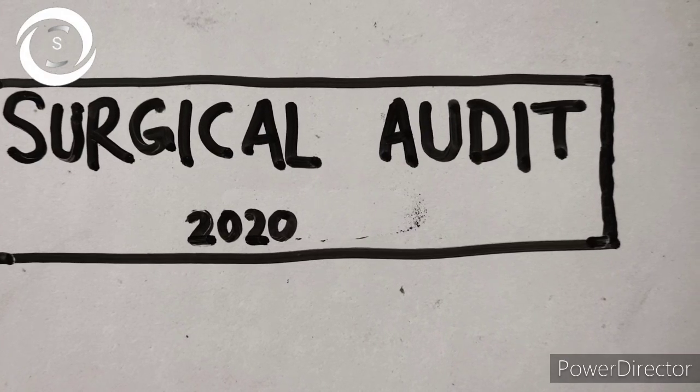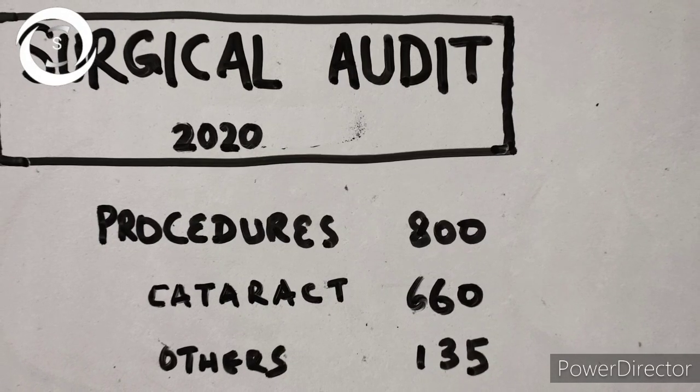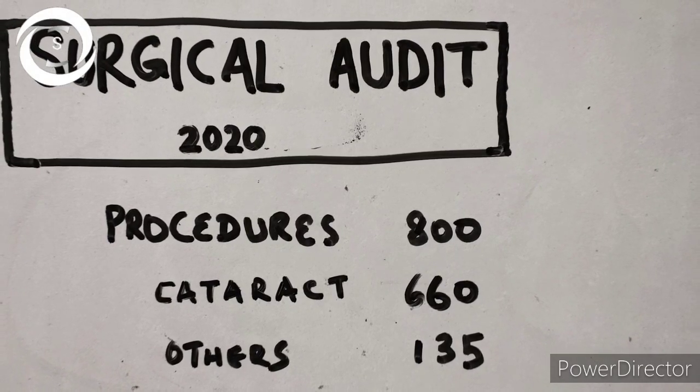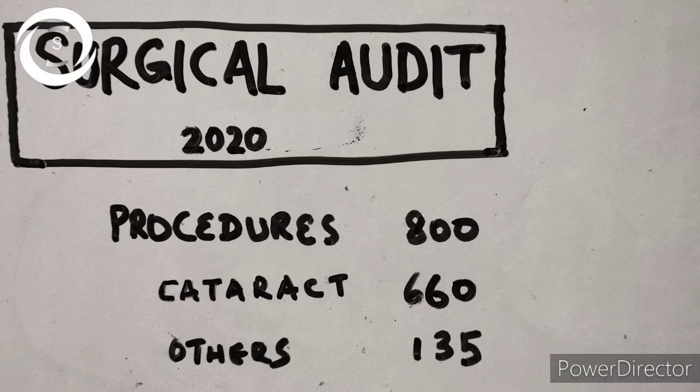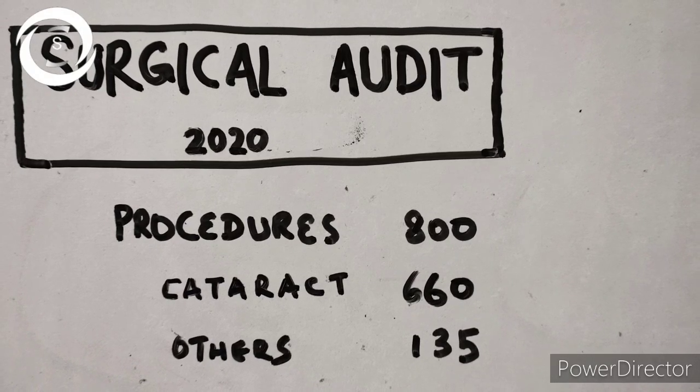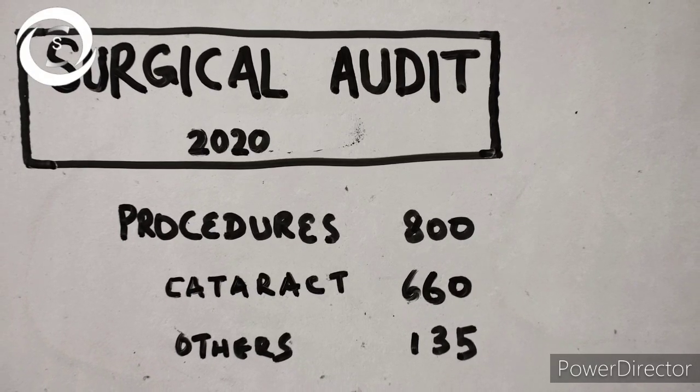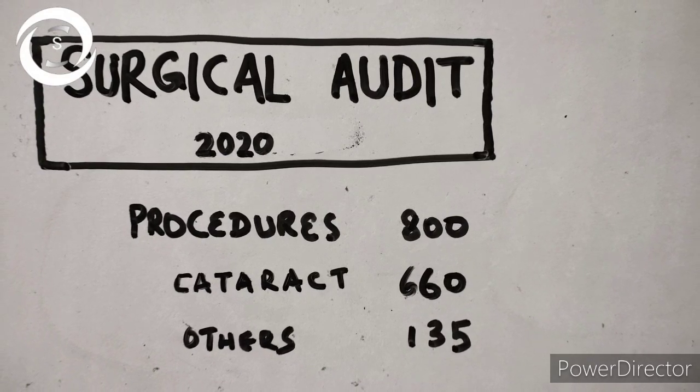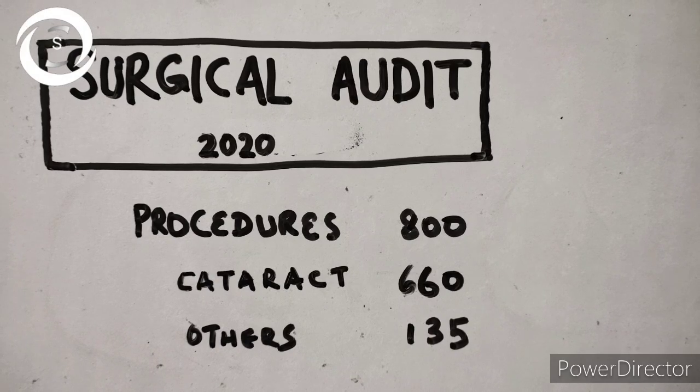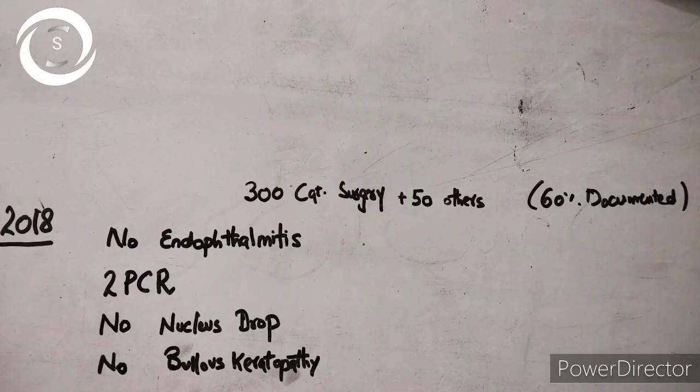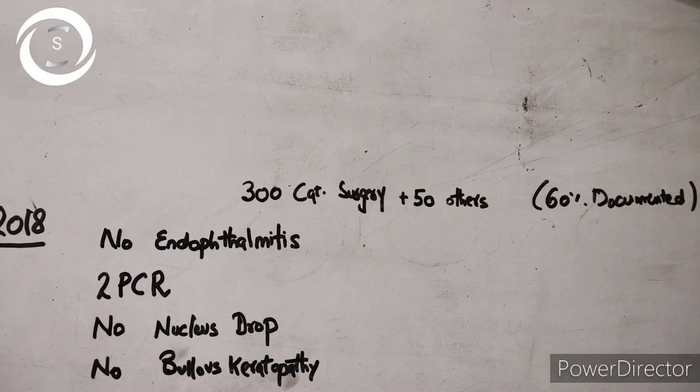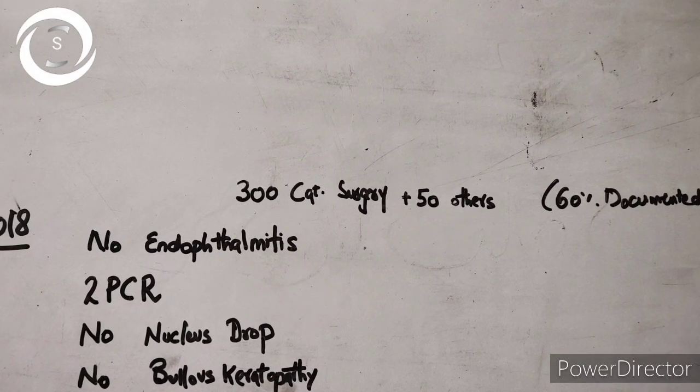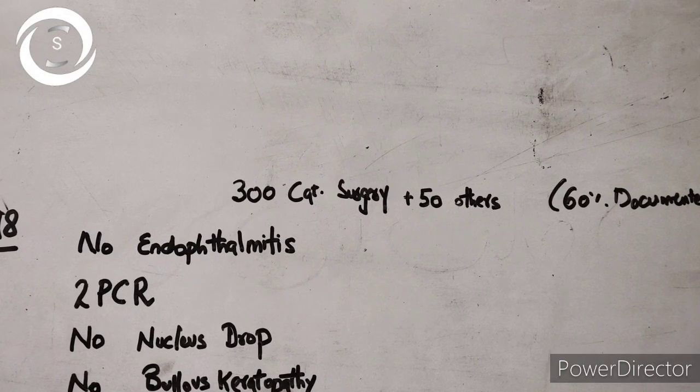Now I started documentation in 2018. 60% of work I did that year I documented, as cataract and non-cataract procedures. I was more concerned about the complications, so I noted down the major cataract surgical complications like no endophthalmitis, two PCRs, no nucleus drop, and no bullous keratopathy in 2018. That was the start of my documentation.